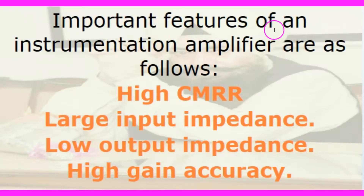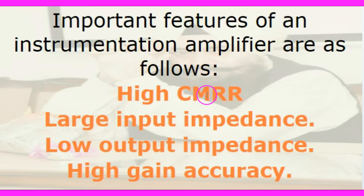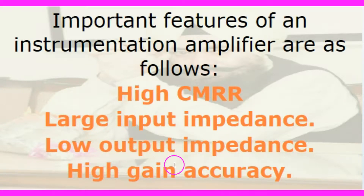The important features of the instrumentation amplifier are high CMRR — common mode rejection ratio — large input impedance, low output impedance, and high accuracy. These are very important features which the instrumentation amplifier should have.